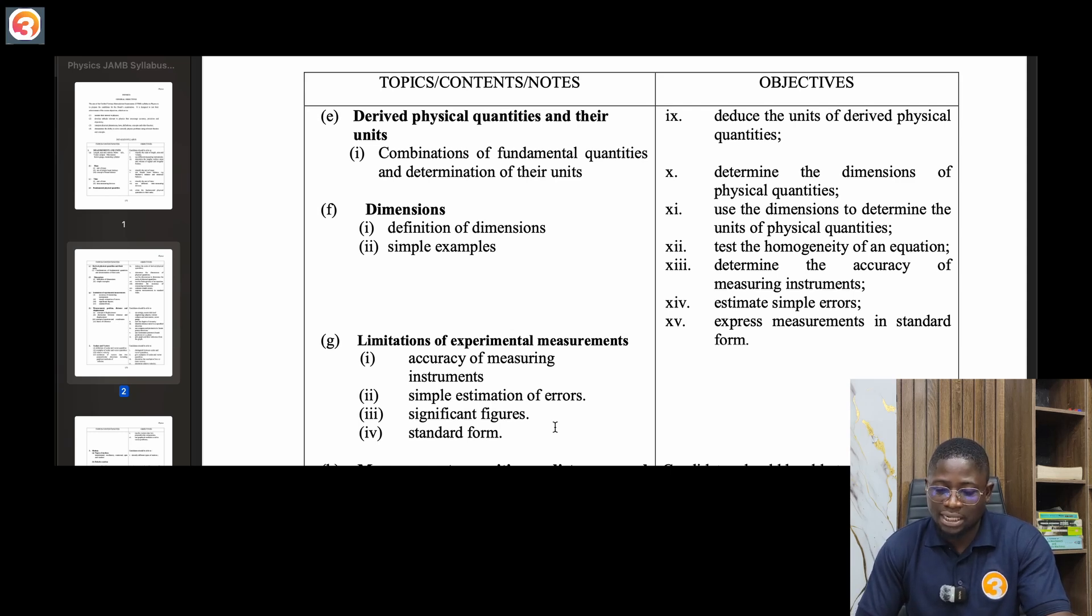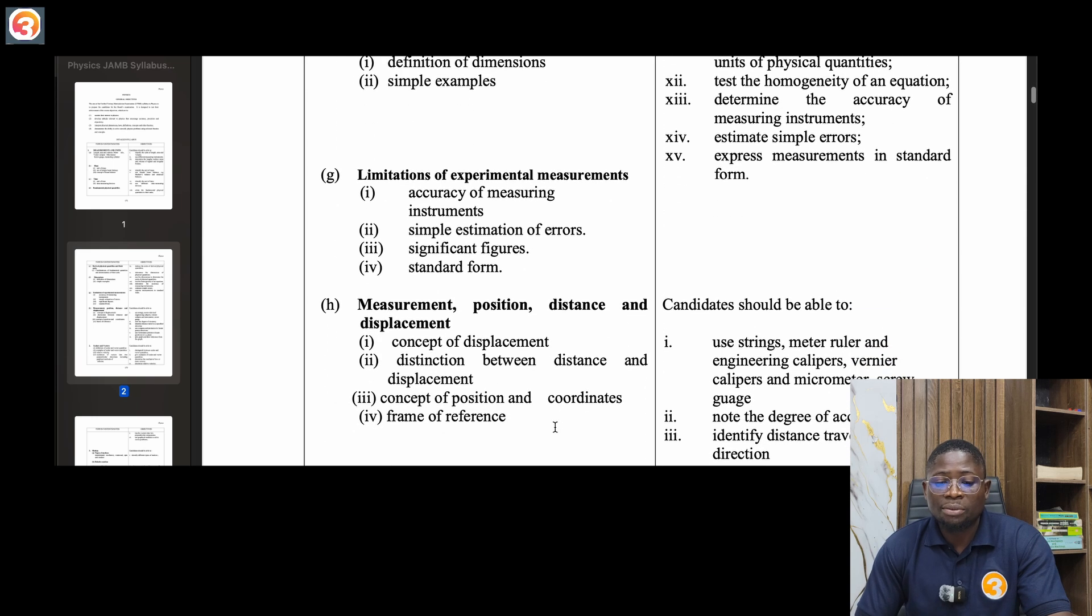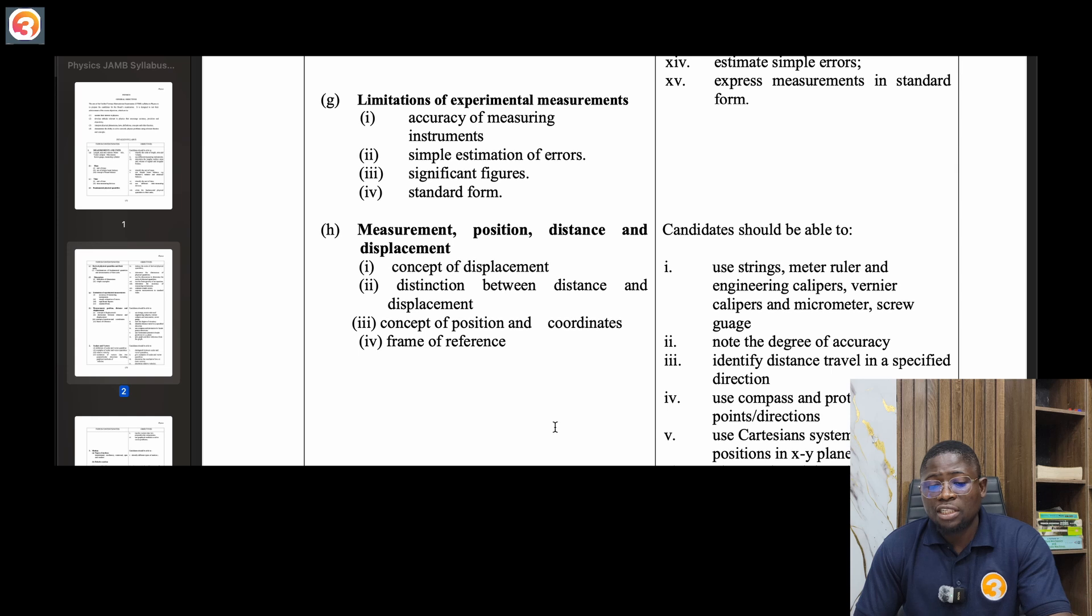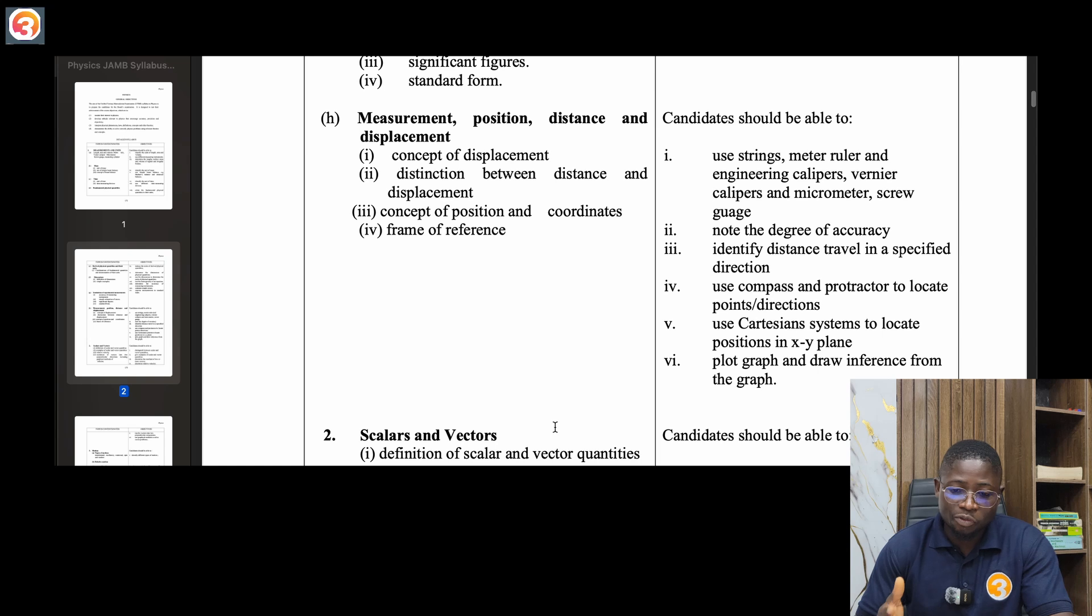Essentially in this part, pay attention to dimensions very well, it's very important. Dimensions of physical quantities, the limitations of experimental measurements, accuracy of measuring instruments, simple estimation of errors, significant figures and standard form. Then measurement, position, distance and displacement, distinction between distance and displacement, concept of position and coordinates, frame of reference.